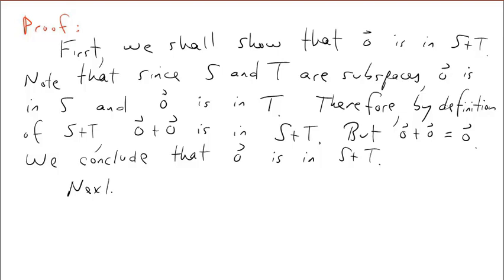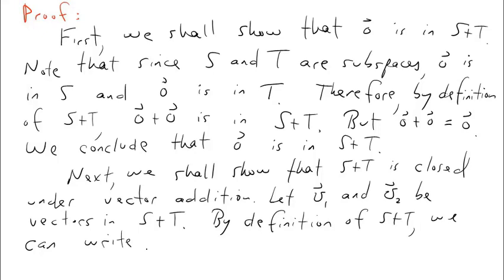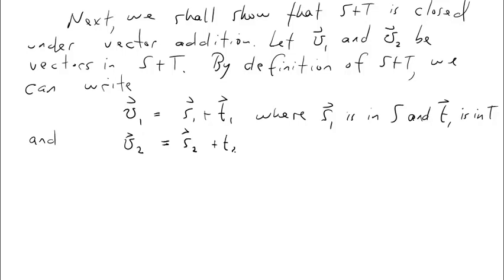Next, we need to show that S plus T is closed under vector addition. To do so, let V1 and V2 be vectors in S plus T. By definition of S plus T, we can write: V1 equals S1 plus T1, where S1 is in S and T1 is in T; and V2 equals S2 plus T2, where S2 is in S and T2 is in T.